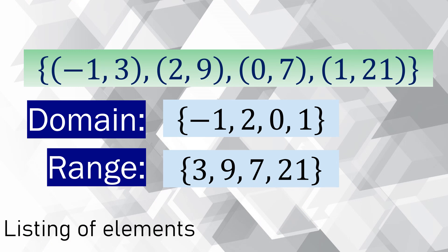We already have an initial discussion about domain and range. Domain is the set of all allowed input values or the first coordinate. The range is the set of all resulting output values, and that is the second coordinate of an ordered pair. The set of ordered pairs is enclosed by braces, meaning it is very limited. We can just list down the elements of the domain — we have negative 1, 2, 0, and 1.